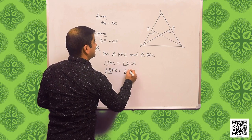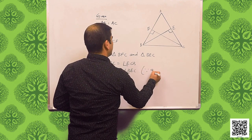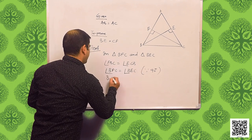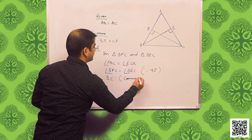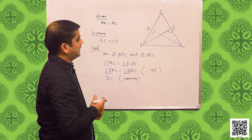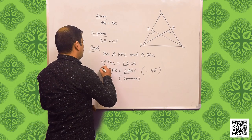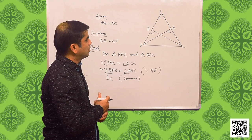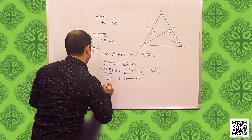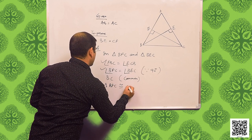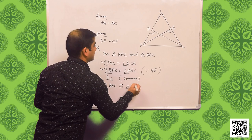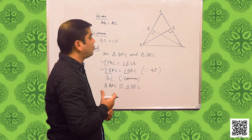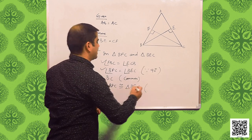In triangle BFC and triangle BEC: angle FBC is equal to angle ECB because they are the angles opposite to the equal sides of the isosceles triangle. Angle BFC is equal to angle BEC because they are 90 degrees each, being altitudes. BC is common. So we have two angles and a side equal, therefore triangle BFC is congruent to triangle BEC by AAS congruency.